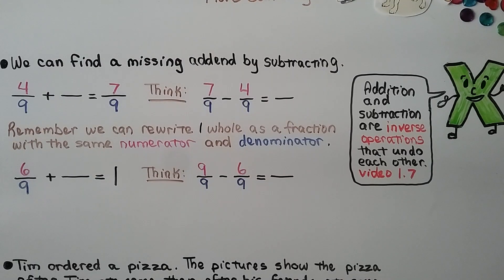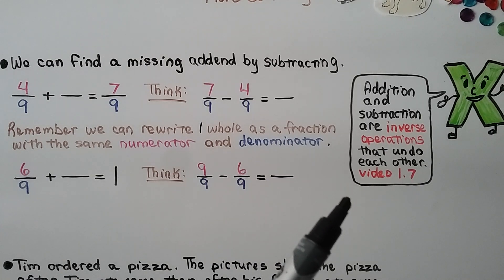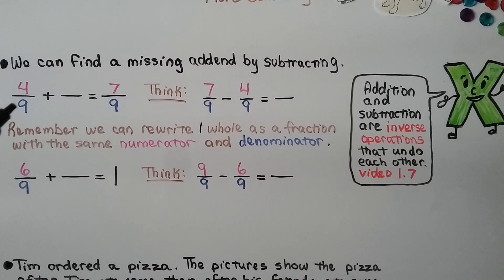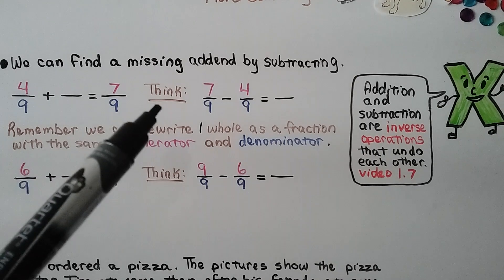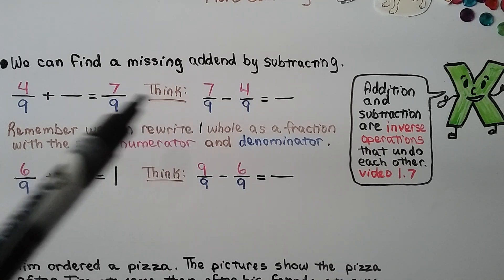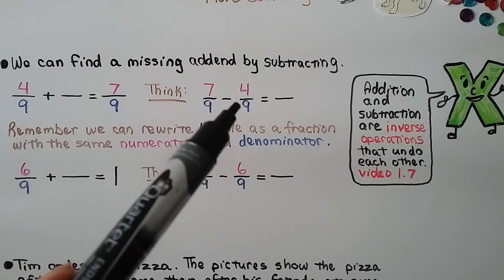We can find a missing addend by subtracting. Remember, addition and subtraction are inverse operations that undo each other — we learned that in video 1.7. It says 4 ninths plus some fraction is equal to 7 ninths. We can use the inverse operation of subtraction: 7 ninths minus 4 ninths.